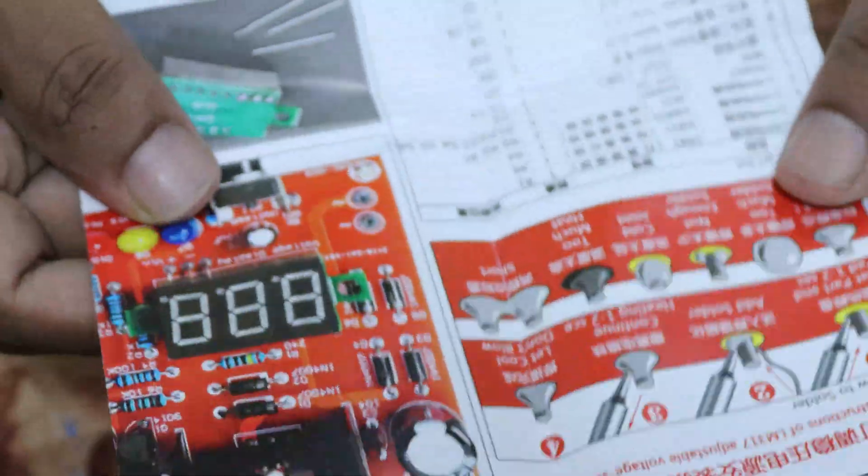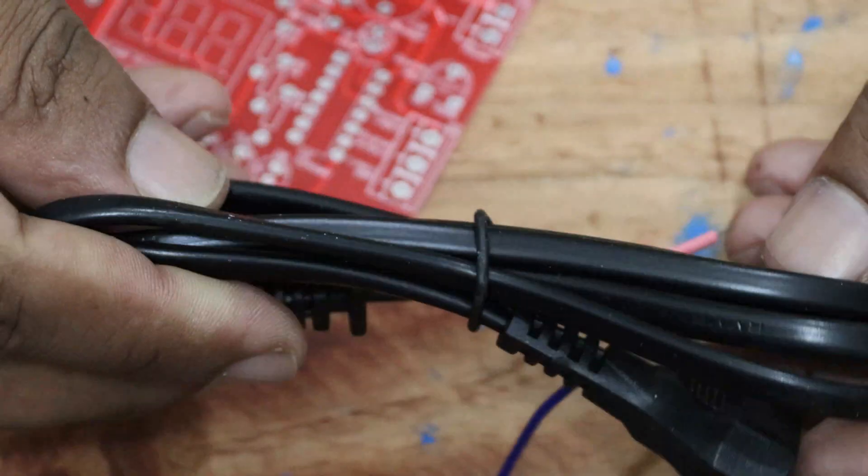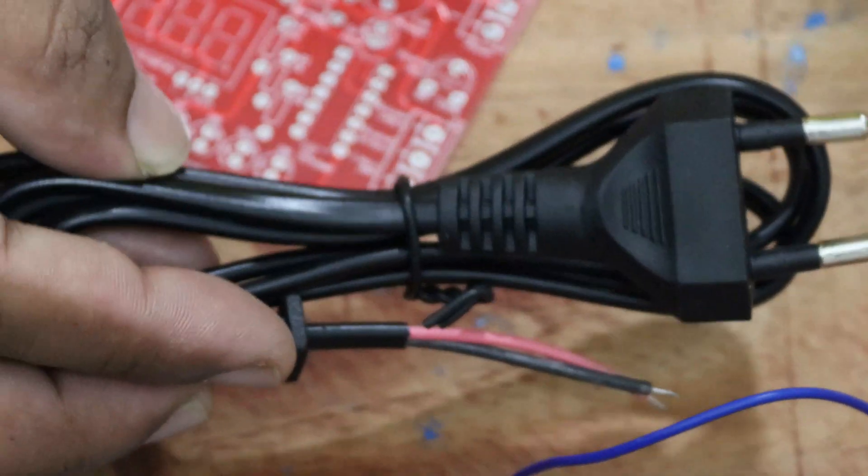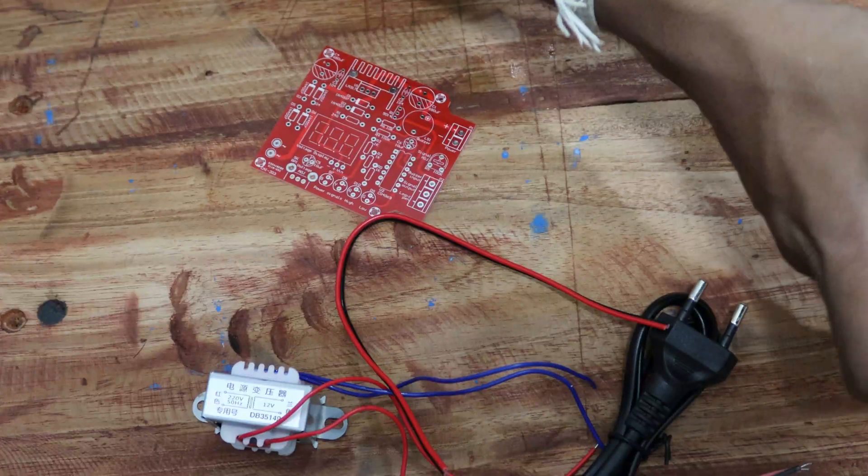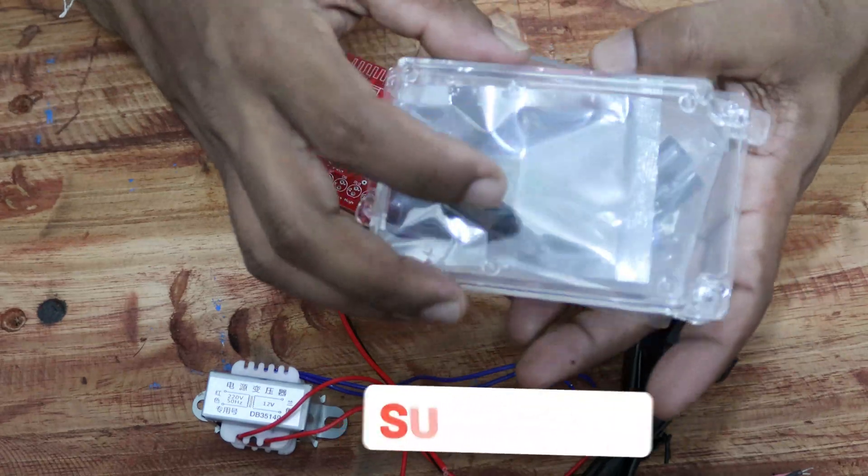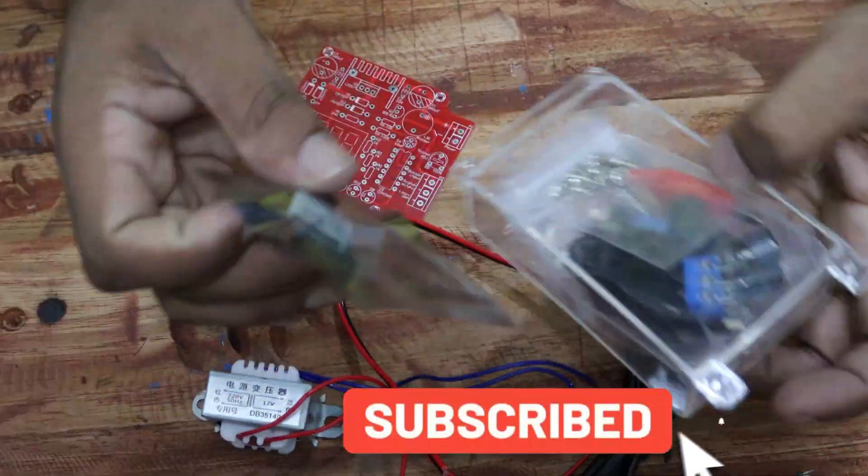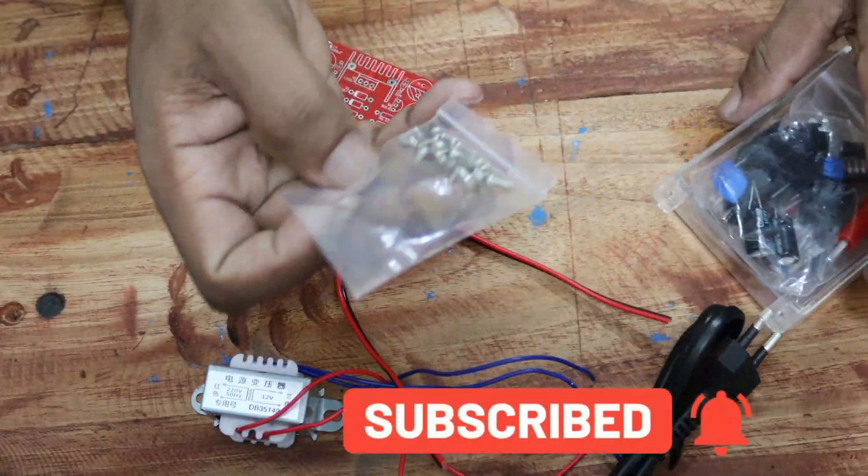You are given a detailed instruction sheet. 12V transformer is the power supply. Two pin wire cord is also included. This is the project box to assemble the project. This is the voltmeter and few nuts and bolts.